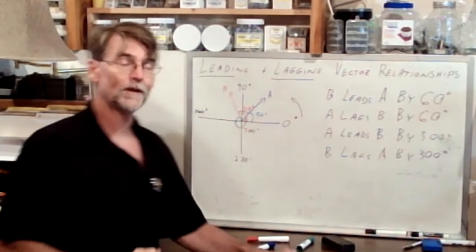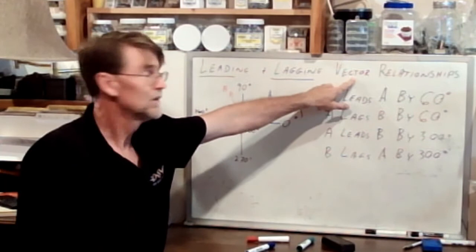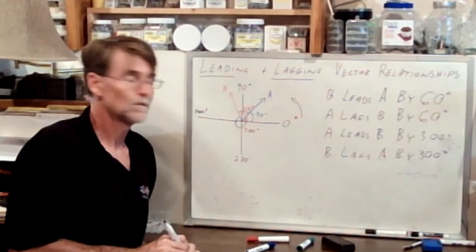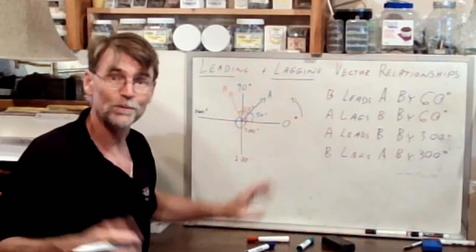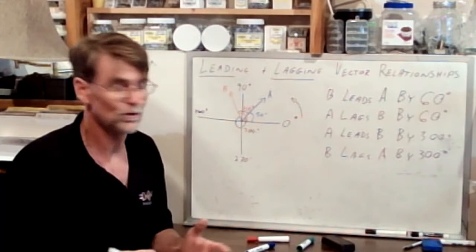So there are four different ways that we can state the vector relationship, the leading and lagging relationship between two vectors when we plot them like this. That concept is going to become really important as we move forward. When we get back into actual electrical circuits and we try to understand the exact nature of the circuit, this idea of phase shifting and leading and lagging will be central to the work that we do.